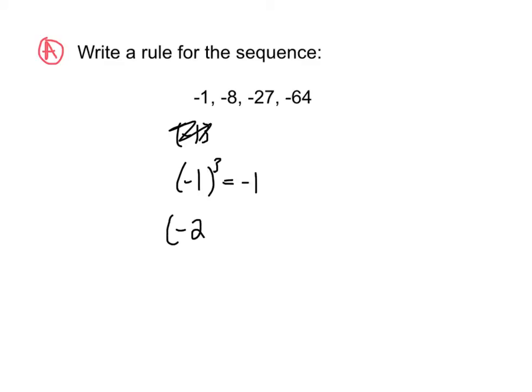Negative 2 cubed is negative 8, negative 3 cubed is negative 27, and negative 4 cubed is negative 64. Therefore, our rule is a sub n equals negative n cubed.